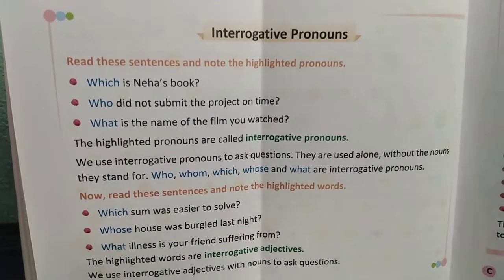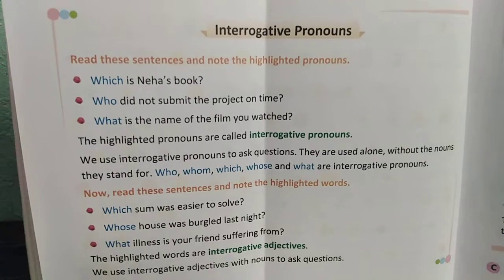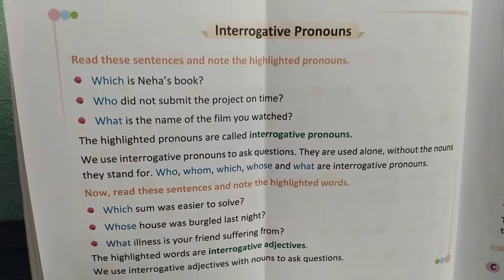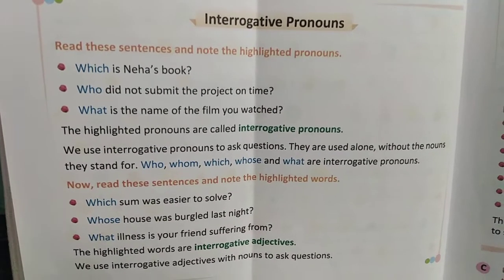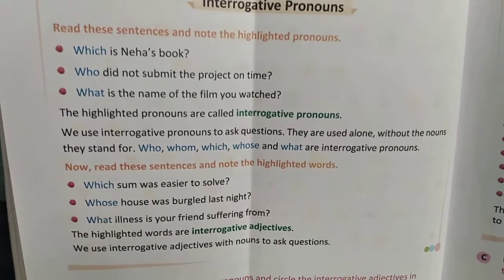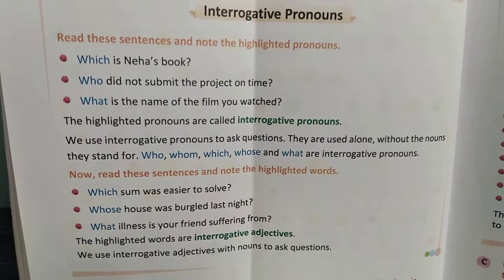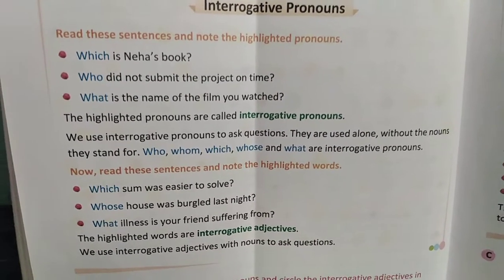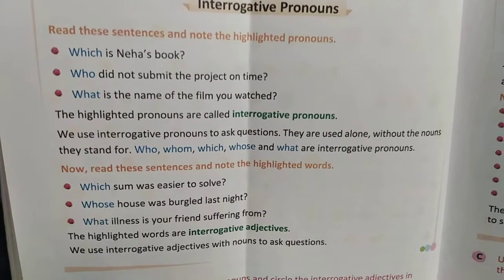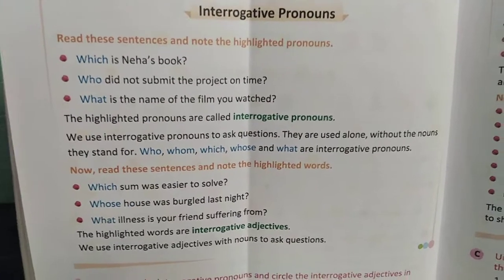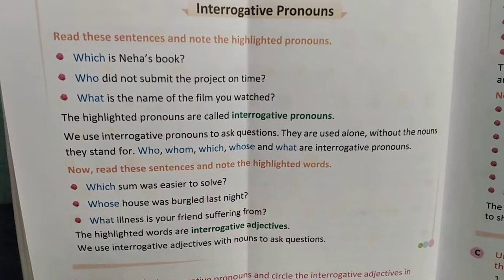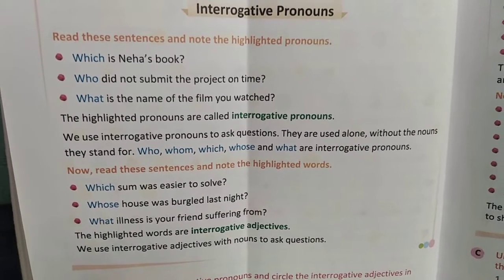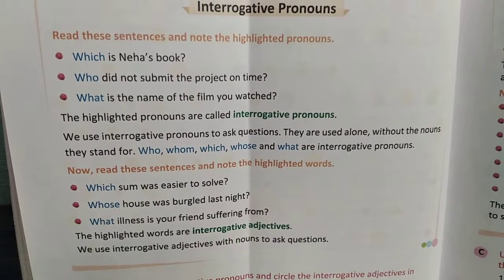About the noun, and they are used as a pronoun. So they are called the interrogative pronoun. You can see here: who, whom, which, whose, and what. These words are called the interrogative pronouns that are used to ask the question about the noun.